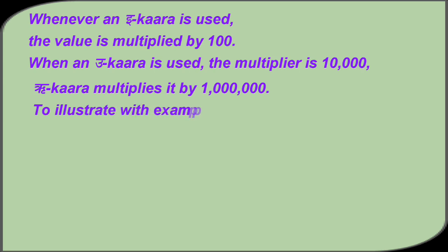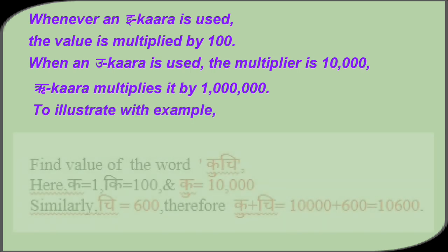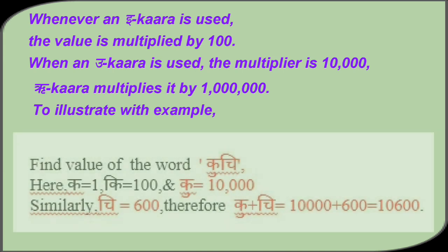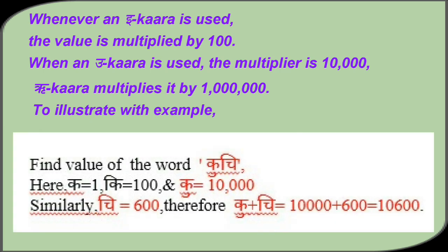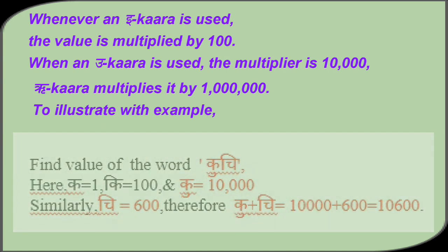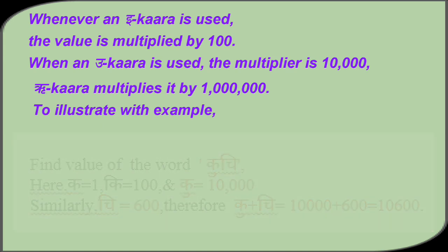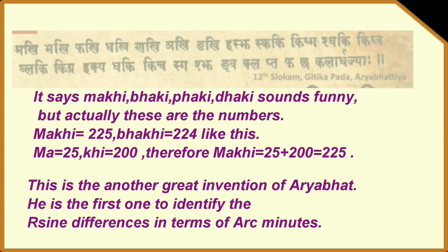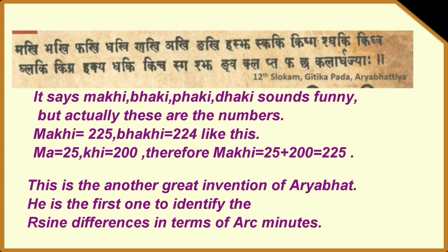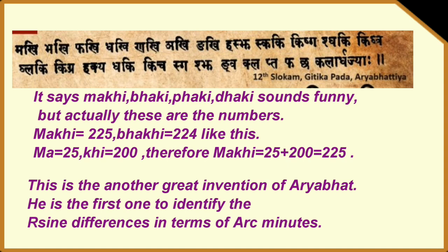To illustrate with example, find value of the word Kuchi. Here, Ka equal to 1, Ki equal to 100 and Ku equal to 10,000. Similarly, Chi equal to 600. Therefore, Ku plus Chi equal to 10,000 plus 600 equal to 10,600. I hope you have understood this. We can see the implementation of this numeral system in a shloka on sine function. It says Makhi, Bakhi, Fakhi, Daki. Sounds funny. But actually, these are the numbers. Makhi equal to 225. Bakhi equal to 224.